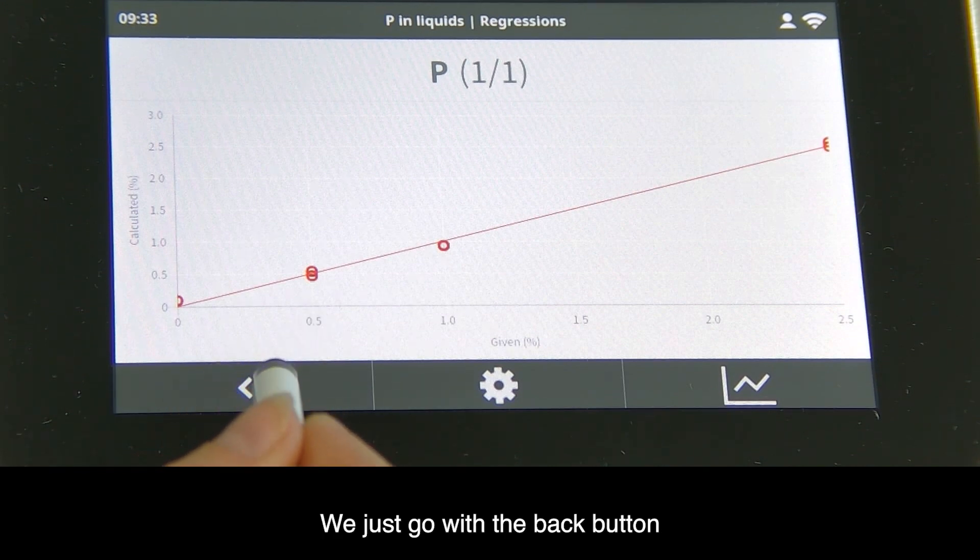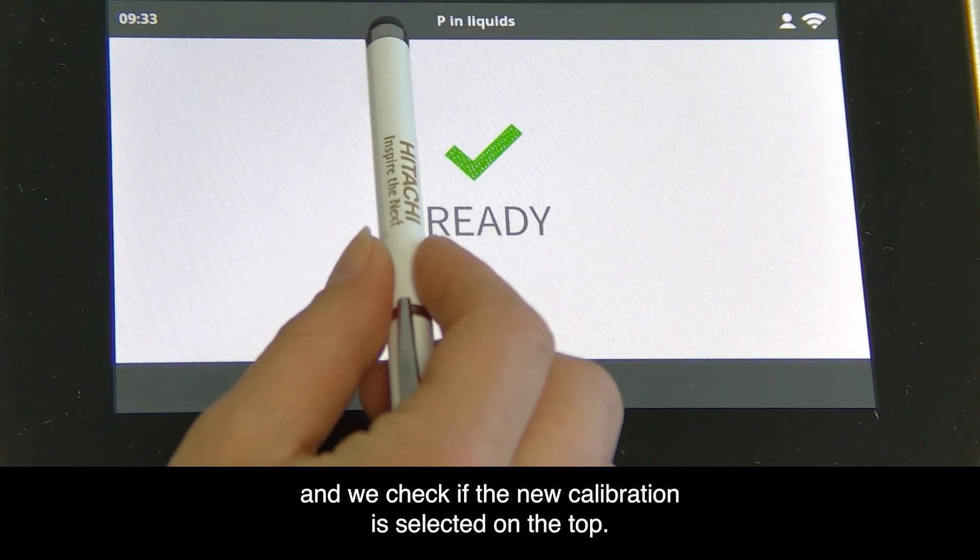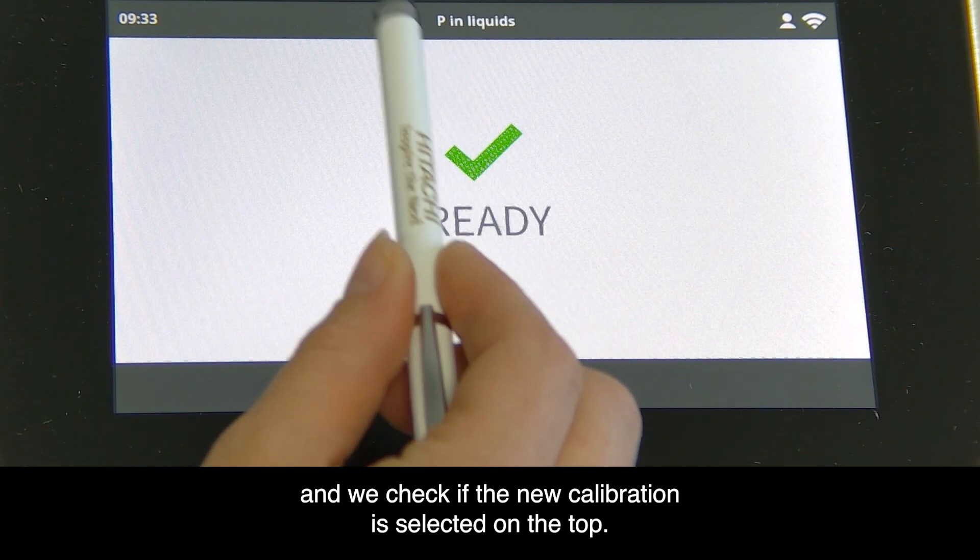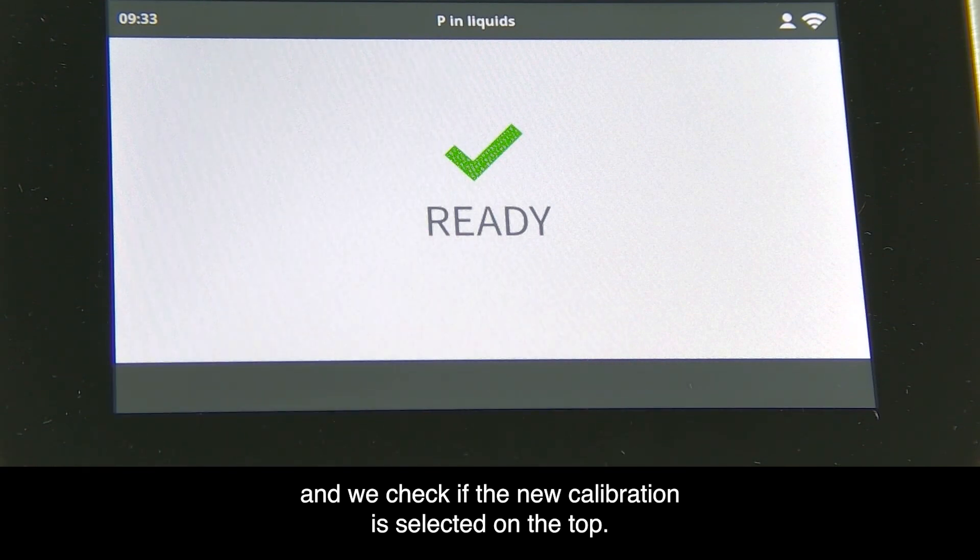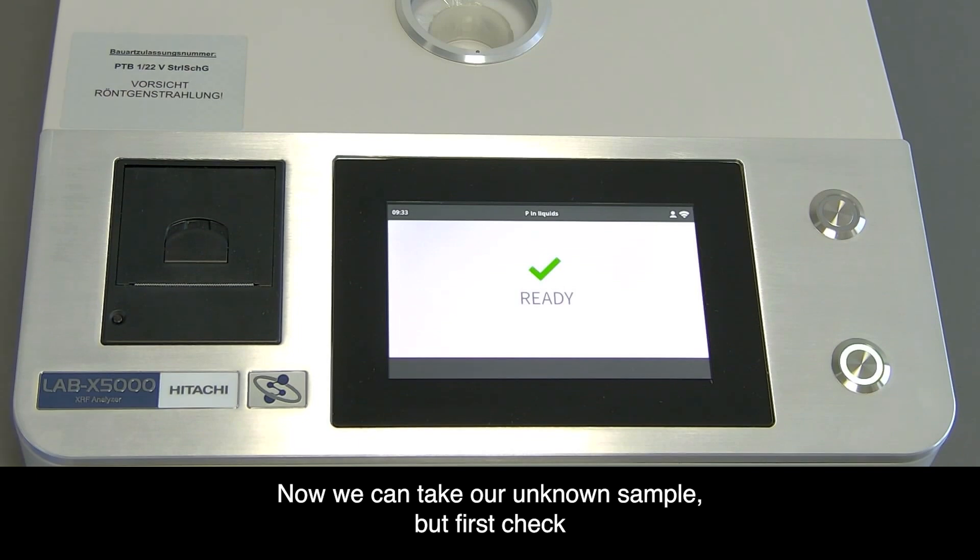We go back to our start button and check if the new calibration is selected on the top. Now we can take our unknown sample.